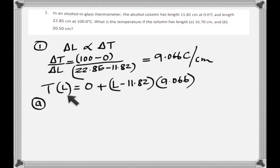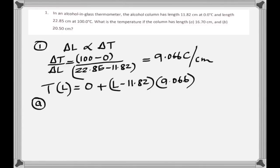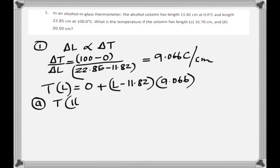The temperature corresponding to any length L is given by a formula starting from zero, and the rate is 9.066 Celsius per centimeter. For points A and B you substitute lengths 16.70 and 20.50 respectively into the formula to get their temperatures.